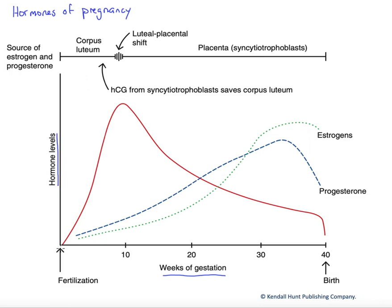We're going to start over here on the left with fertilization — that's at time zero. At fertilization, the sperm and the egg meet to form the zygote. We immediately begin to undergo cell cleavage, increasing the number of cells in that early embryo. It will travel for about a week along that uterine tube via ciliary action.